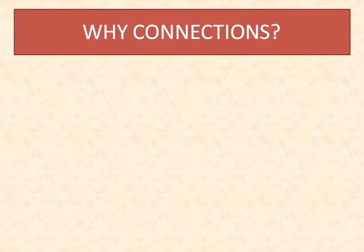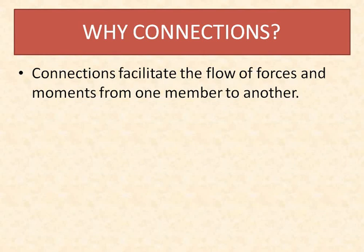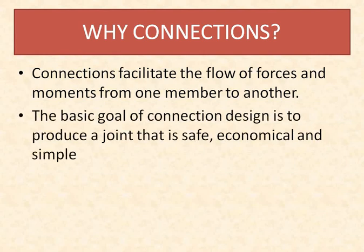Today we'll be learning about bolted joints and connections. Before going to the bolted connections, let me tell you why we need connections. You all know that a steel structure is an assemblage of different members like beams, columns, etc., which will be connected and then only a steel structure will be formed. These connections are made so that the flow of forces and moments from one member to another flows easily. The basic goal of a connection is to produce a joint that is safe, economical, and simple.